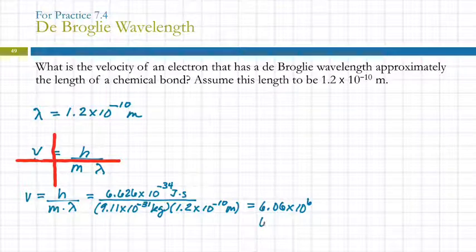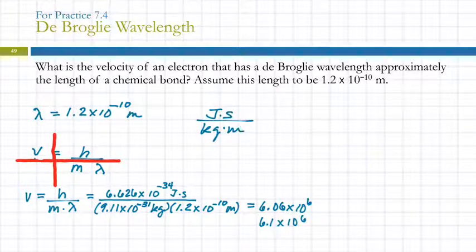I'm getting 6.06 times 10 to the 6th. We should probably round to 6.1 times 10 to the 6th. What about those units? We've got joules times seconds and kilograms times meters. And what would we like to have? Like meters per second, right?